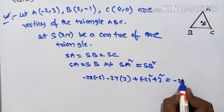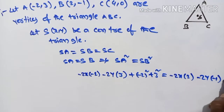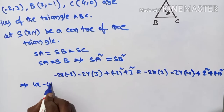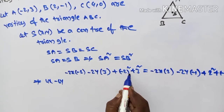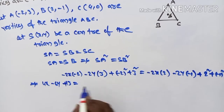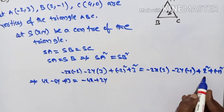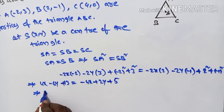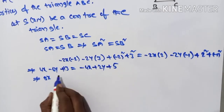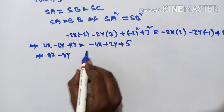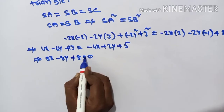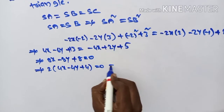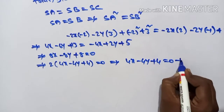Setting SA² = SB²: 4x - 6y + 13 = -4x + 2y + 5. Rearranging: 4x + 4x = 8x, -6y - 2y = -8y, and 13 - 5 = 8. So 8x - 8y + 8 = 0, dividing by 2: 4x - 4y + 4 = 0. This is equation number 1.